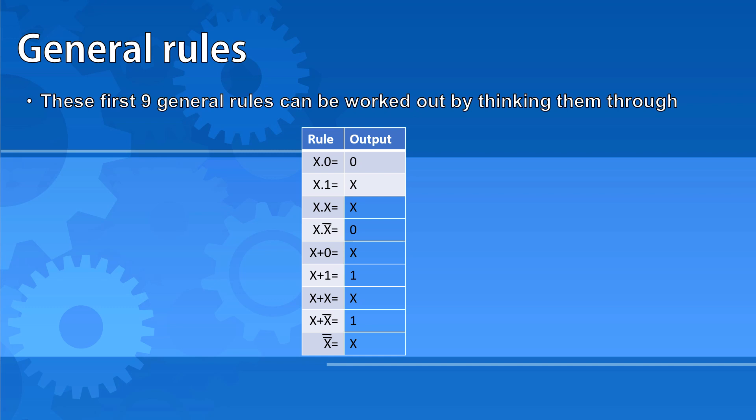x AND x is going to be one if x is a one, and zero if x is a zero. So x AND x is the same as just x. x AND NOT x — one of them is going to be a zero and one of them is going to be a one, so in an AND, that's always going to come out as zero.